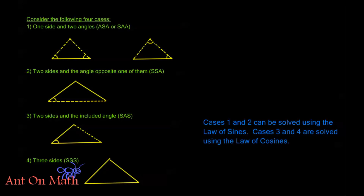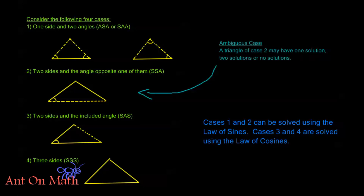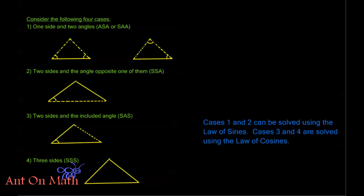Hello and welcome back to Anton Math. In this video we're going to be finishing up with our law of sines. We're going to be looking at case two triangles — SSA. SSA triangles we sometimes call the ambiguous case. We call it this because a triangle of case two may have one solution, two solutions, or no solutions. We're going to do several examples so we can get a good grasp of identifying which of these cases it's going to be.